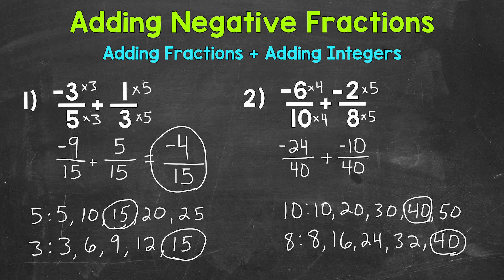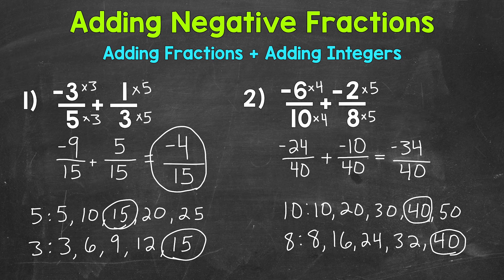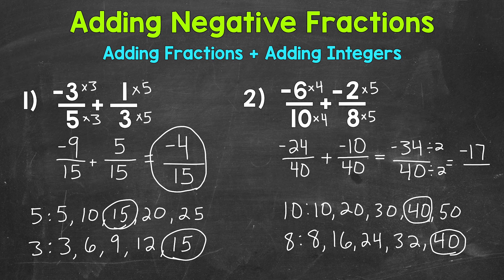Now we add our numerators: negative 24 plus negative 10 equals negative 34. Our denominator is 40, giving us negative 34 fortieths. We have a common factor of two, so let's divide both by two to simplify. Negative 34 divided by two is negative 17, and 40 divided by two is 20. Our simplified answer is negative 17 twentieths.